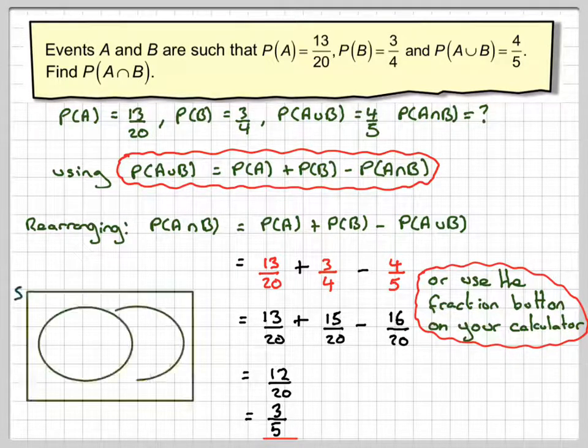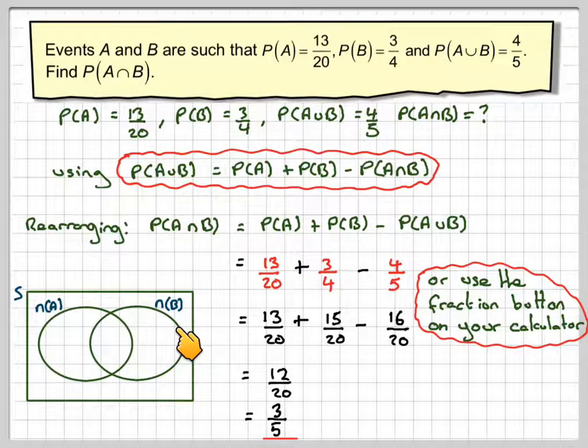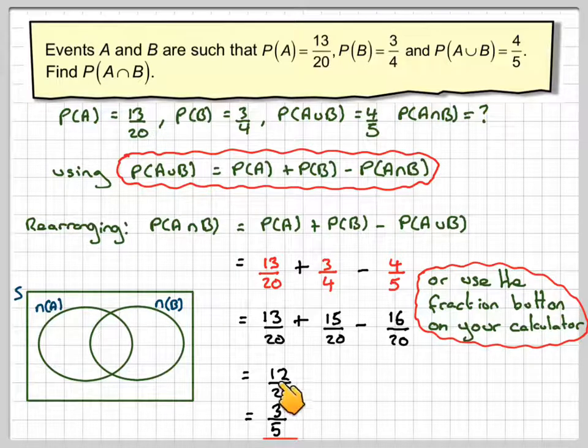Right, let's have a look at this in a Venn diagram. So we've got the sample space, the number in A, the number in B. So in the intersection we have 12.